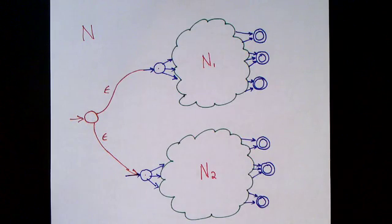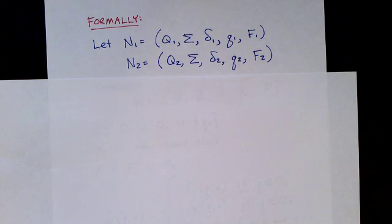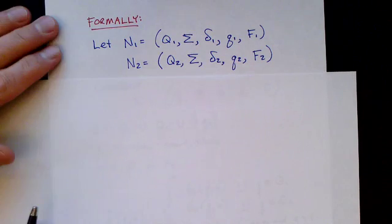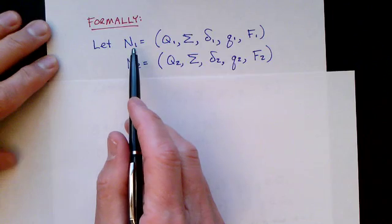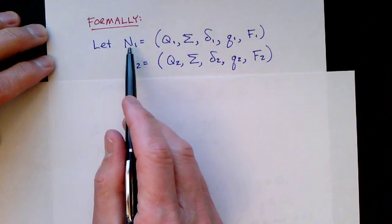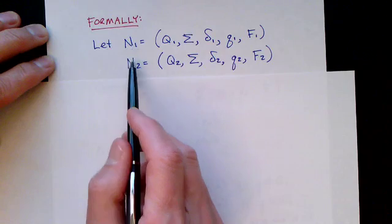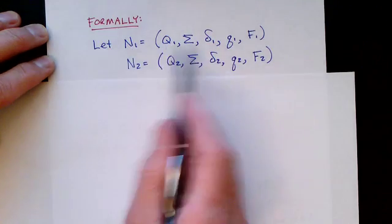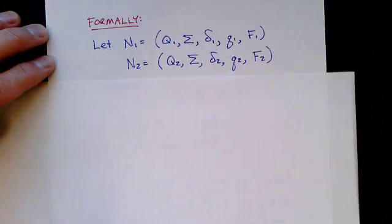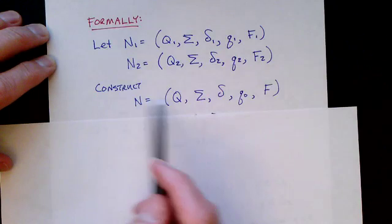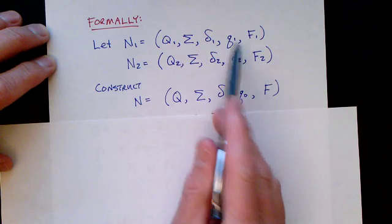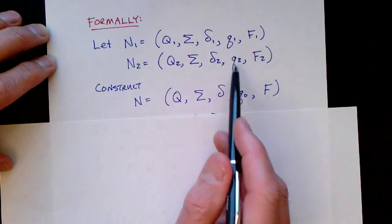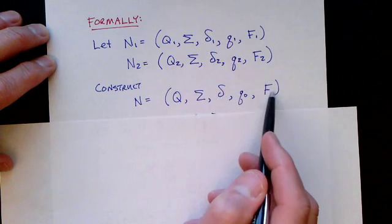Next, let's look at how this looks formally. To be more precise, let's show the same construction with symbols. We have our two machines to recognize A1 and A2, each with their own specification. We're going to construct a new machine N to recognize the union. It will have a new starting state different from the starting states of the initial machines, a new transition function, and a new set of final states.